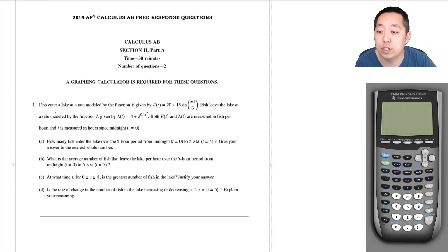Let's start with this one. Fish enter a lake at a rate modeled by the function E(t) given by this, and they leave by L(t) given by this. Both E(t) and L(t) are measured in fish per hour, and t is measured in hours since midnight.